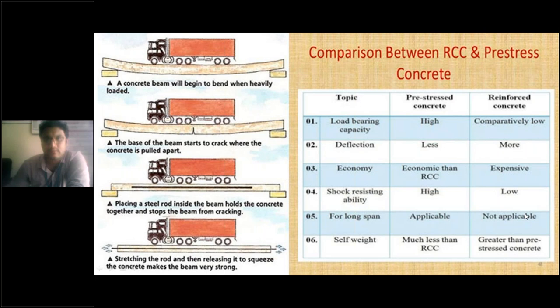The sixth and last parameter is self weight. Prestressed concrete has less self weight than RCC because you are reducing the reinforcement in PSC, which itself reduces the self weight. The density of reinforcement steel is around 7,850 kg/m³, so when there is less reinforcement in prestressed concrete, the self weight of the structural element is reduced.